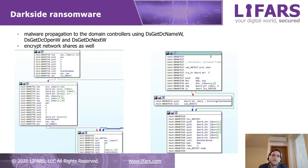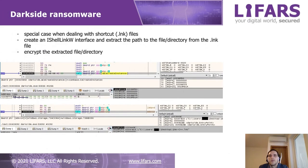The ransomware can also propagate to the domain controller using specific APIs, and it can also encrypt network shares. There is a special case when the malware deals with shortcut files — it will create an IShellLink interface and extract the path to the file or directory from the shortcut file, and then encrypt that file or directory as normal.